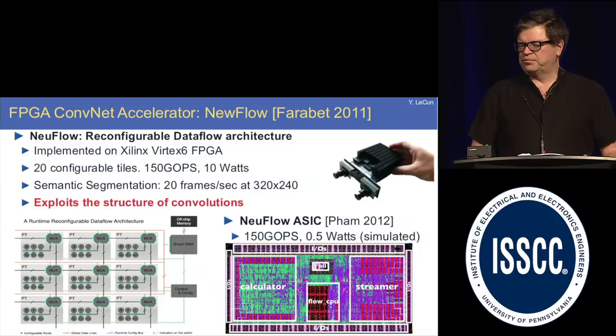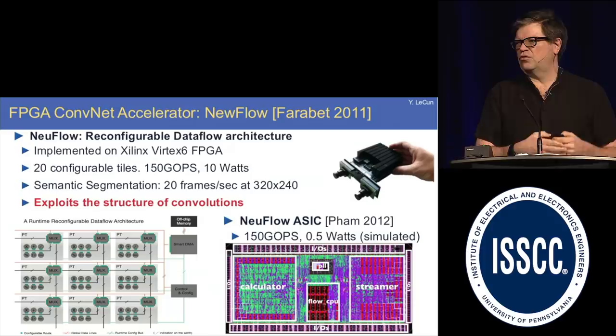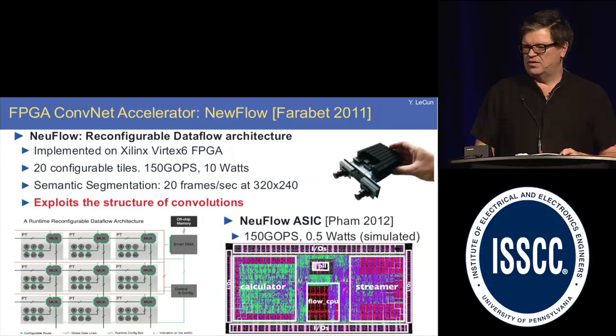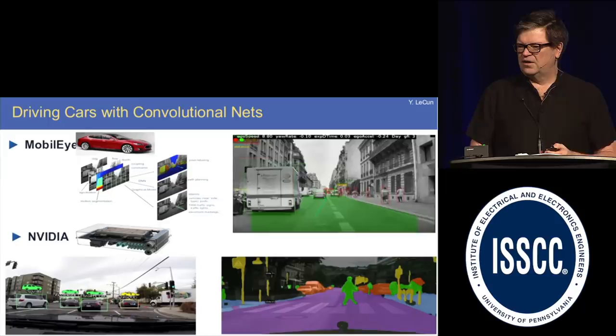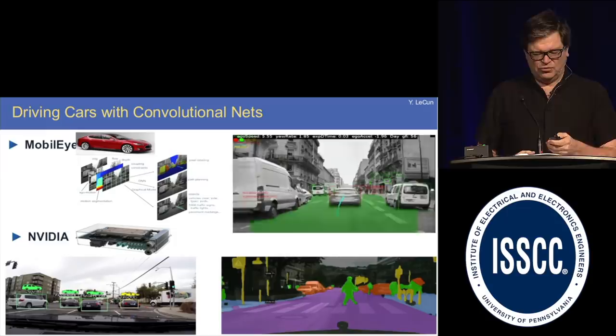The NewFlow architecture exploits the structure of convolutions in a big way — minimizing memory traffic and doing as many operations in succession as possible without going back to memory. It uses a dataflow architecture, reviving ideas from the 1970s. We eventually collaborated with Eugenio Culurciello's lab at Purdue and got a design for a chip, though it was never properly fabricated. These ideas partly influenced people working on autonomous driving now using semantic segmentation in real time.